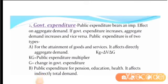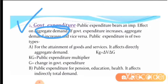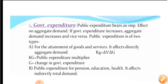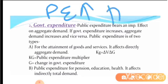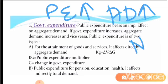The next method of fiscal policy is government expenditure. Government expenditure on aggregate demand is a very important factor. When government expenditure increases, aggregate demand increases, and consequently national income also increases.